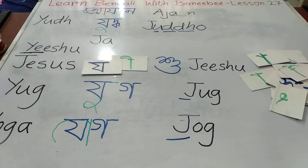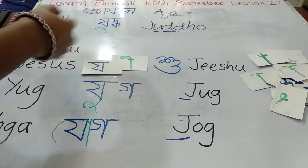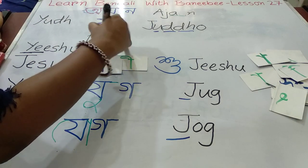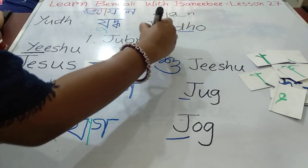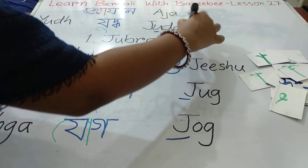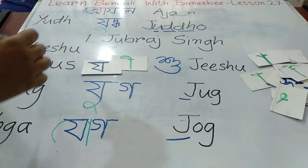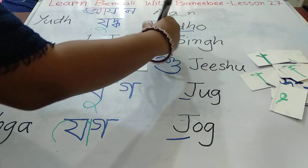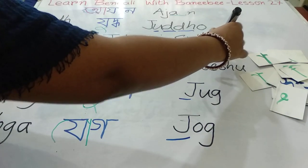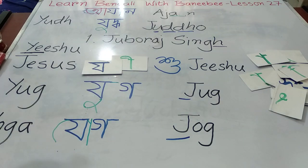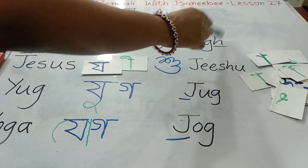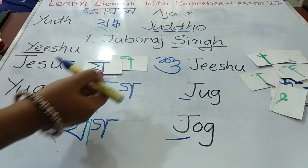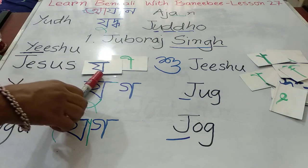Now I'm going to give you a task: write 'Juboraj Singh' for me in Bangla. 'Juboraj' is 'Yuboraj' in Hindi. For 'Singh', forget about the H because we don't pronounce it in Bangla — we say 'Sing', so the H is silent. Just focus on writing up to 'G'. Write it in Bangla — that's your task for the next lesson and I look forward to seeing your answers.